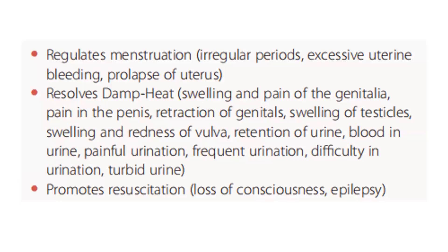For the summary, Liver 1 regulates menstruation — irregular periods, excessive uterine bleeding, prolapse of uterus. It resolves damp heat: swelling and pain of the genitalia, pain in the penis, retraction of genitals, swelling of testicles, swelling and redness of vulva, retention of urine, blood in urine, painful urination, frequent urination, difficulty urination, and turbid urine. It also promotes resuscitation for loss of consciousness or epilepsy.